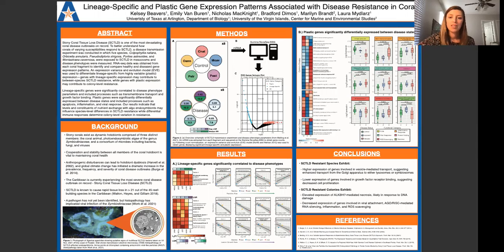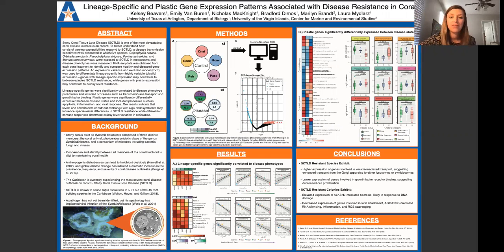These animals exist as holobionts made up of three distinct members: the coral animal, symbiotic algae that live within the coral tissue, and a rich and dynamic microbiome. Stability of this holobiont is crucial to maintaining coral health, however this is difficult in the face of climate change because anthropogenic disturbances can throw off this homeostasis, which is likely a major contributor to the dramatic rise in coral disease outbreaks since the 70s.